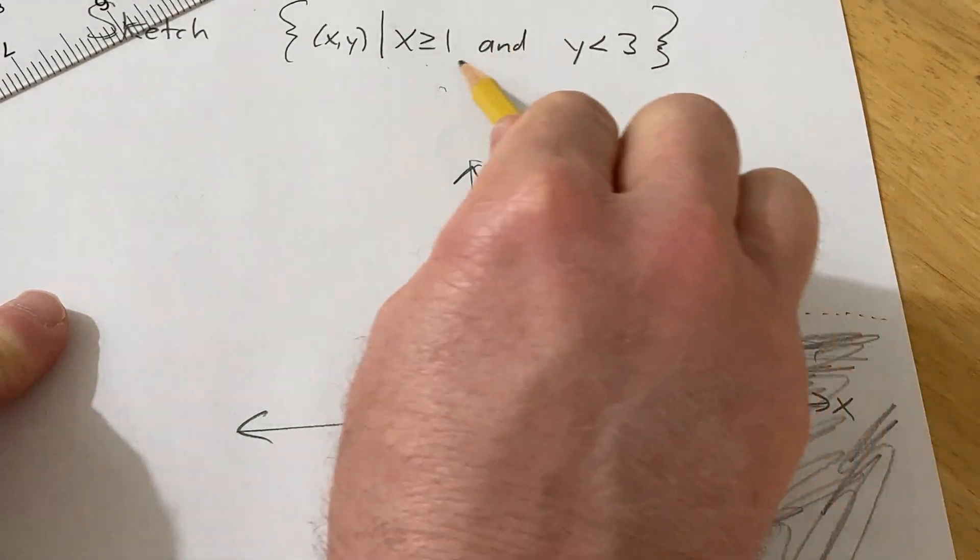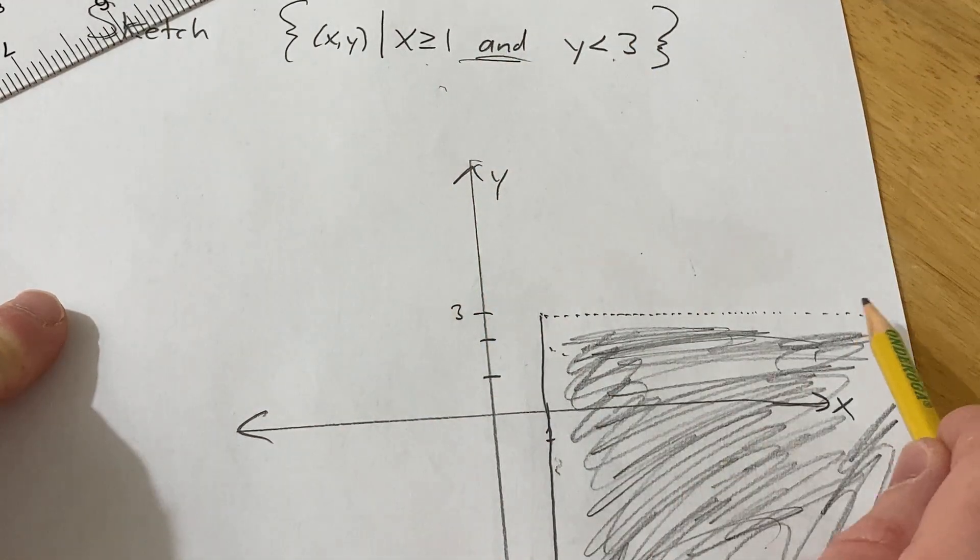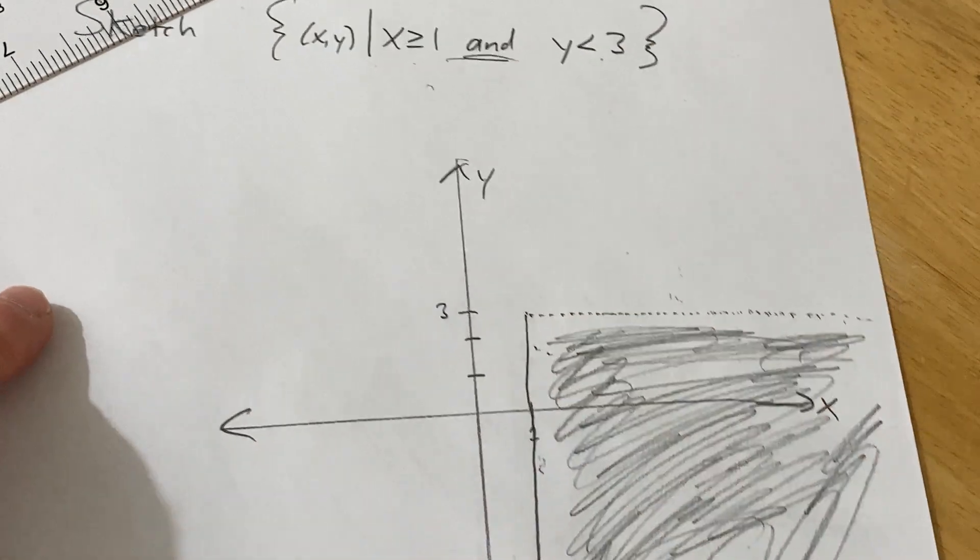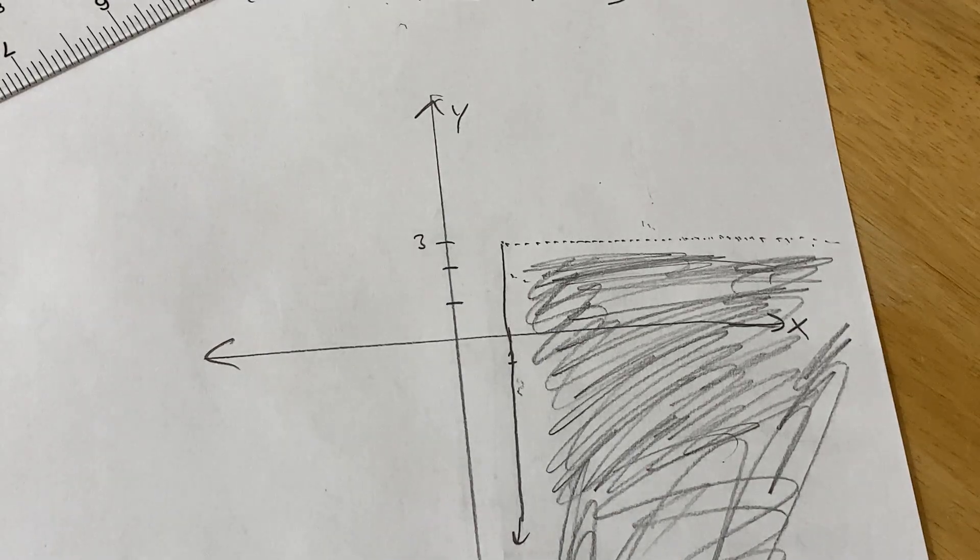So x greater than or equal to 1 and y less than 3. Note the dotted line on y less than 3. That's there because we're not including the 3. I hope this video has been helpful. Good luck.